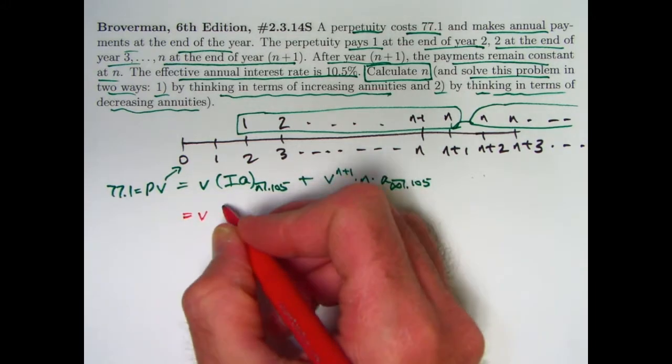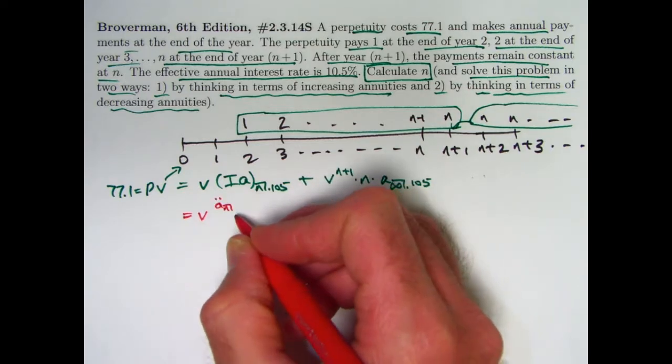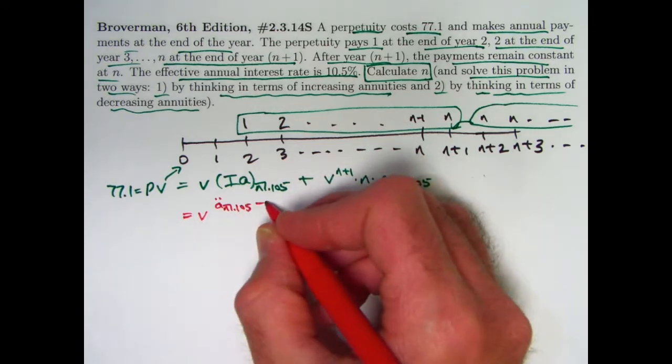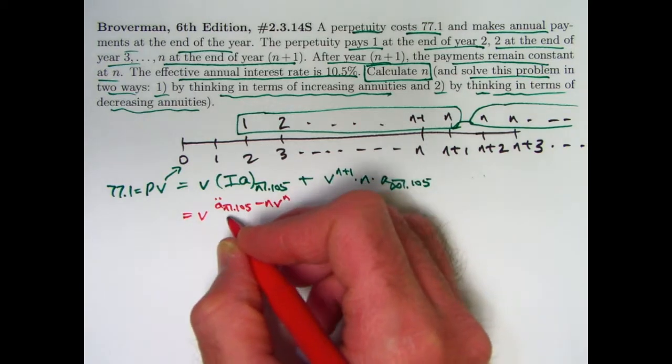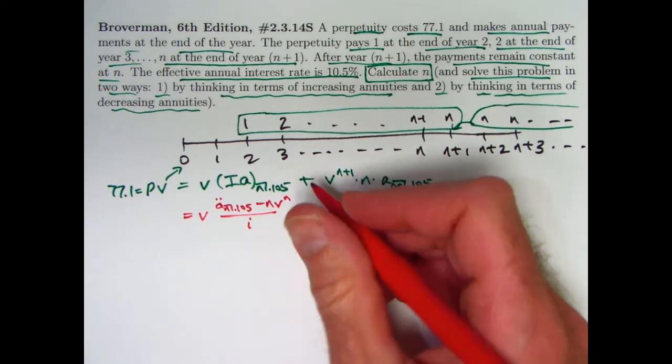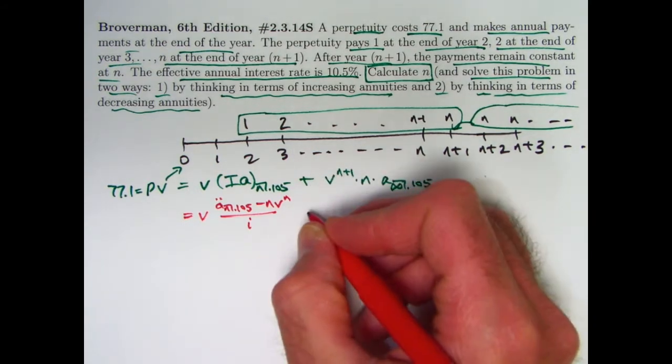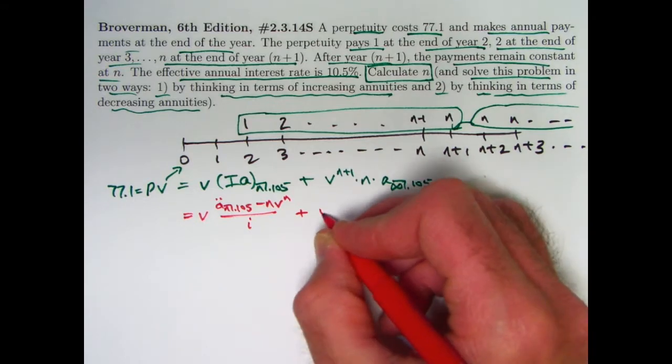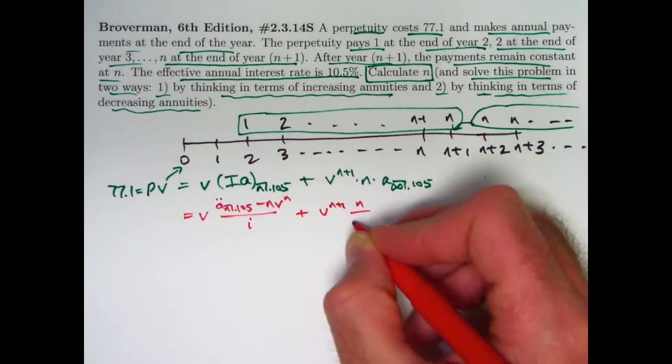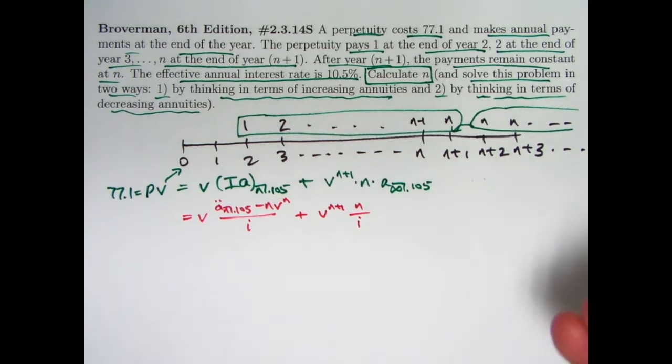First of all, for IA sub N, that will be A N double dot, and the present value of a level annuity due, 0.105 is the interest rate again, minus N times V to the N, excuse me, divided by the interest rate I. I is 0.105, but I won't bother plugging that in. And then I've got the formula for this thing right there is just 1 over I, so 1 over I. Again, I could plug in the 0.105. I think I'd like to keep it algebraic for the moment here.